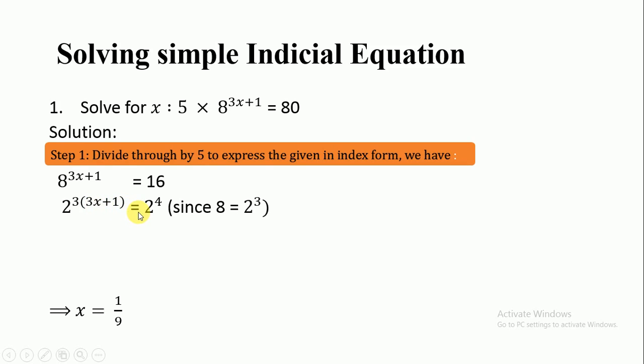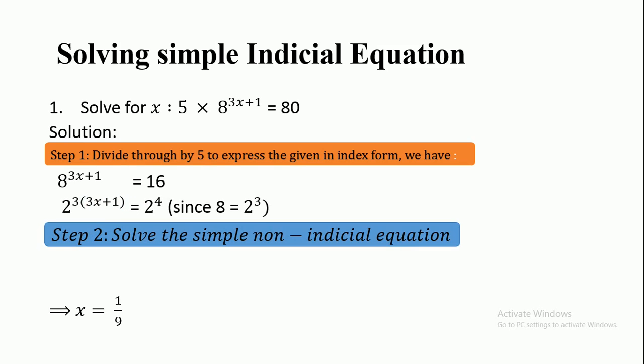From this level, you can cut out the bases because they are equal. You are left with the powers: 3(3x+1) = 4. When you open the brackets, it becomes a simple equation: 9x + 3 = 4.